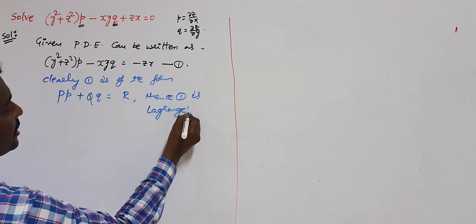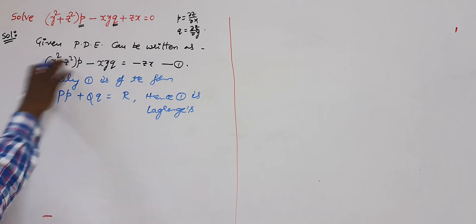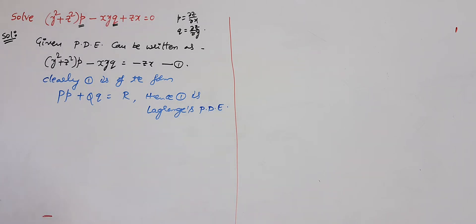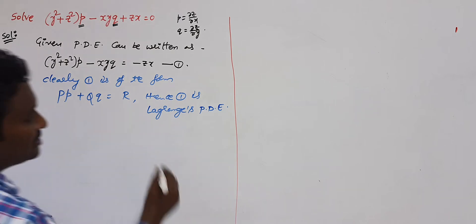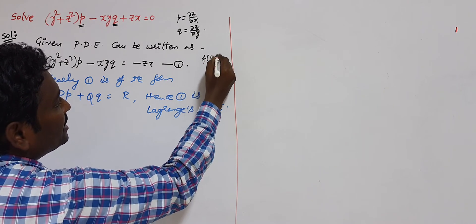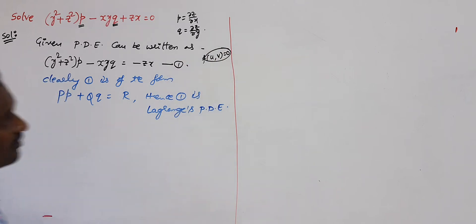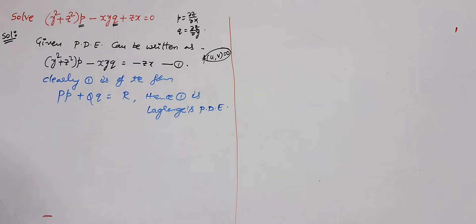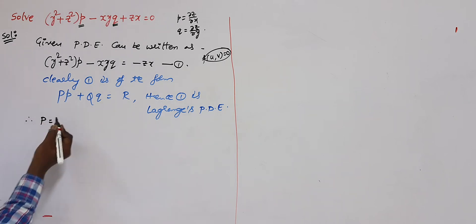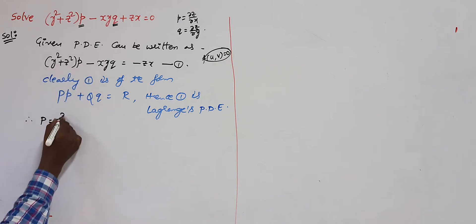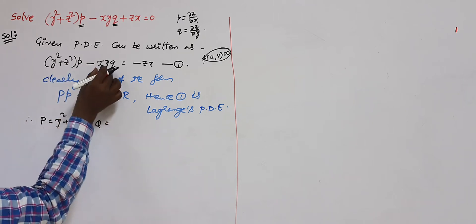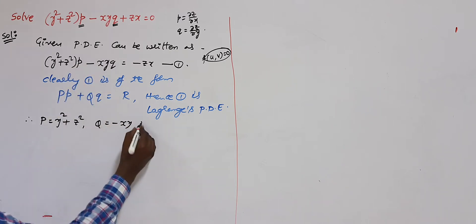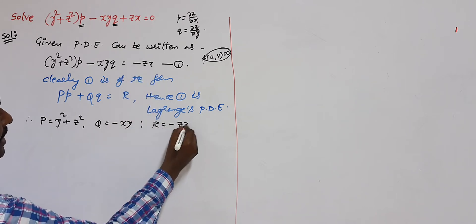First of all, every student should identify the structure of Lagrange's PDE. The general solution of this type is f(u, v) = 0, where u is the first solution and v is the second solution. Here, Capital P is the coefficient of small p: y² + z². Capital Q is the coefficient of q on the left side: −xy. Do not forget to write the negative sign. And R is the right-hand side function: −zx.